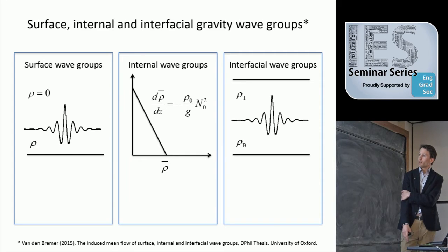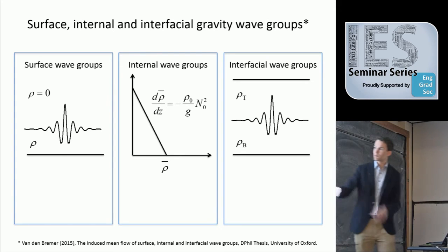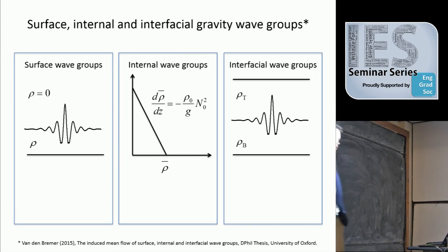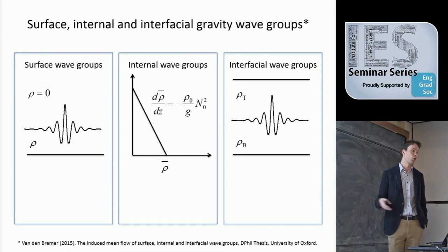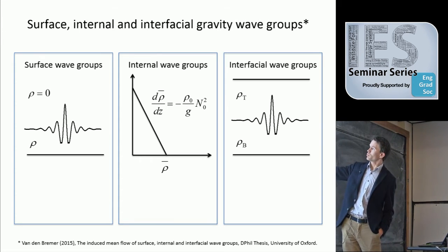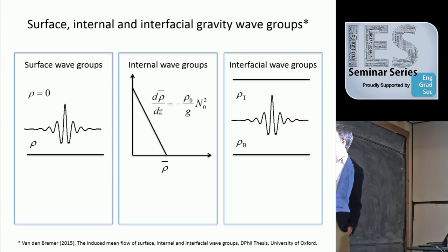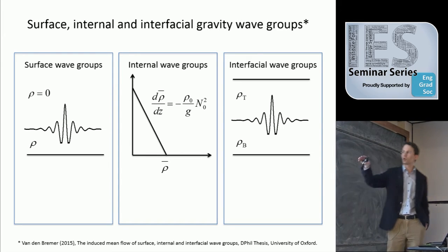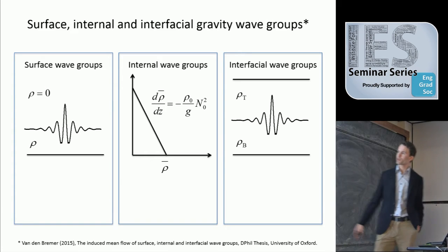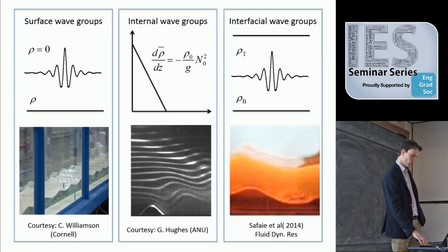Today I'd like to present some results on two types of gravity waves: surface waves and internal waves. You can think of surface waves as a simple example where you have two density layers and air is the top layer, which you can really ignore for the purposes of your calculation. The other limit is where you have two fluids superimposed onto one another — those are called interfacial waves. The case in the middle is where the density doesn't have a discrete jump but varies continuously, and the terminology I use for those is internal wave groups, because they're not associated with the surface as such. I'll focus on the two boxes on the left.